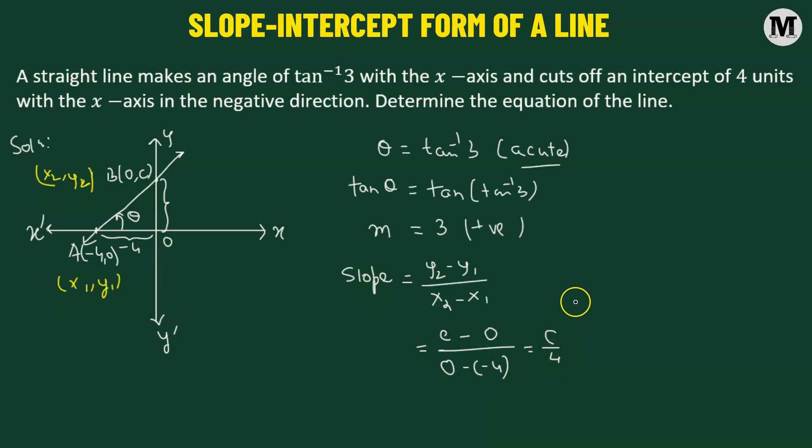Now, we have already defined the slope, the slope of the line, which is 3. So 3 is going to be equal to C over 4, such that we have C equals to 12.